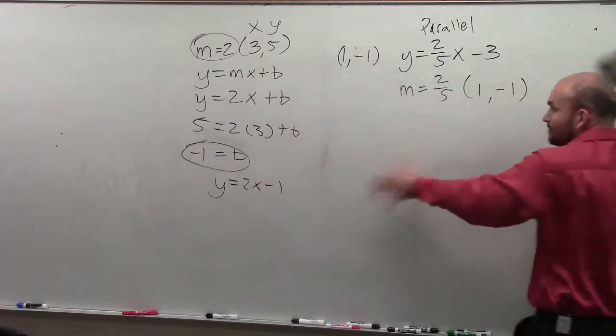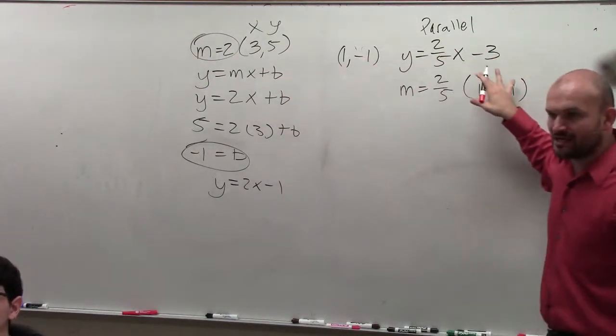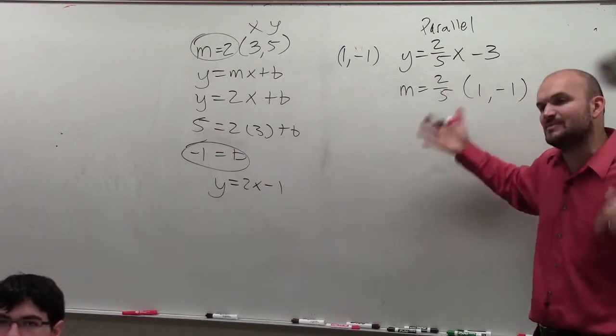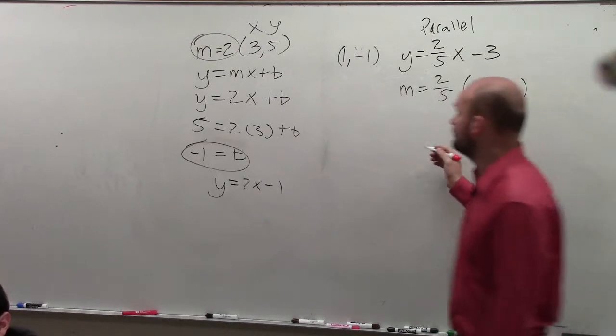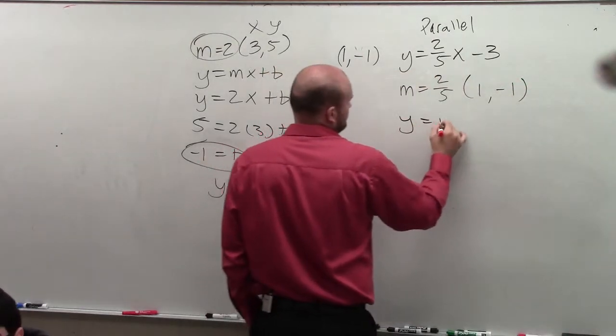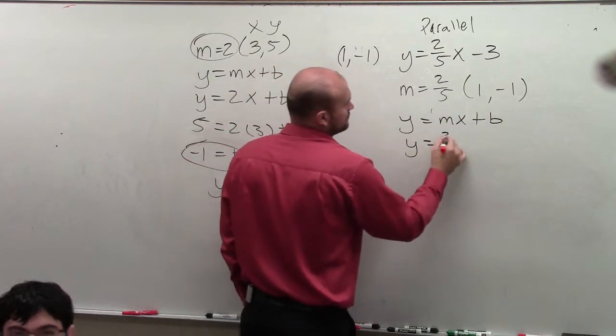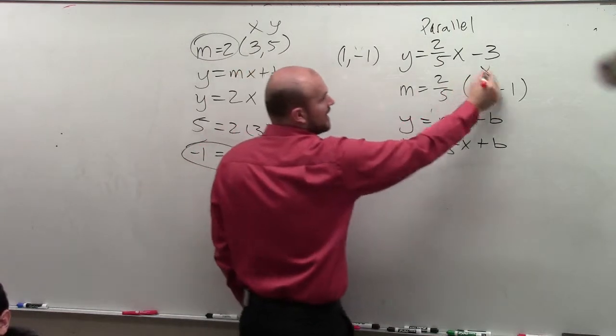So now you do this problem just like that. So we don't care about anything in the equation except for what is the slope, because the slope for parallel lines has to be exactly the same. Does that make sense? Now we just do it like we did before. Plug in 2 fifths. Plug in x and y.